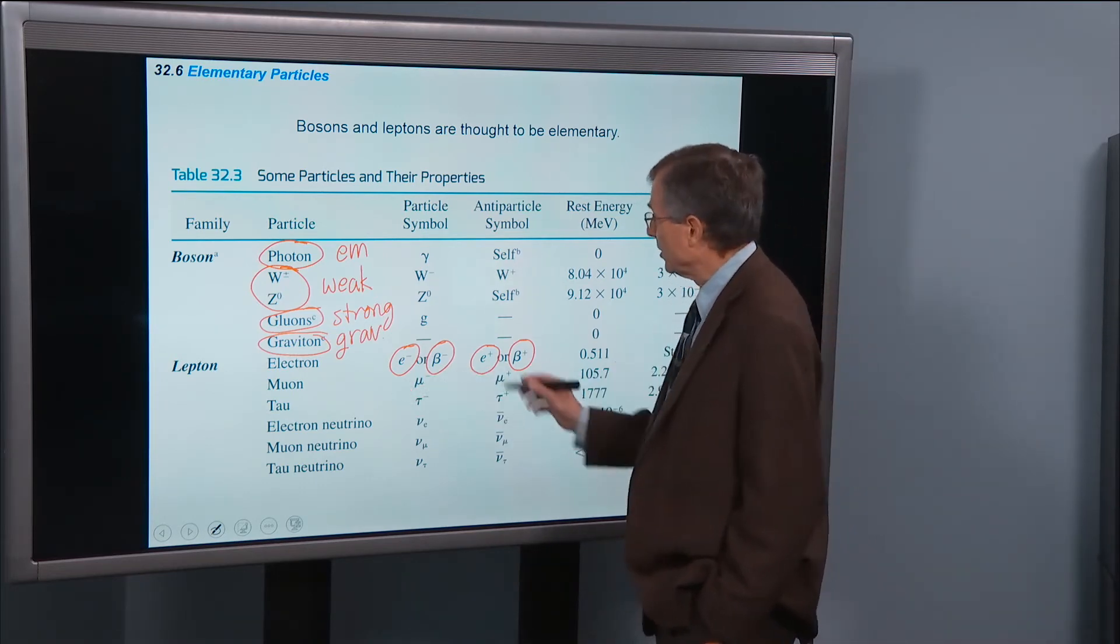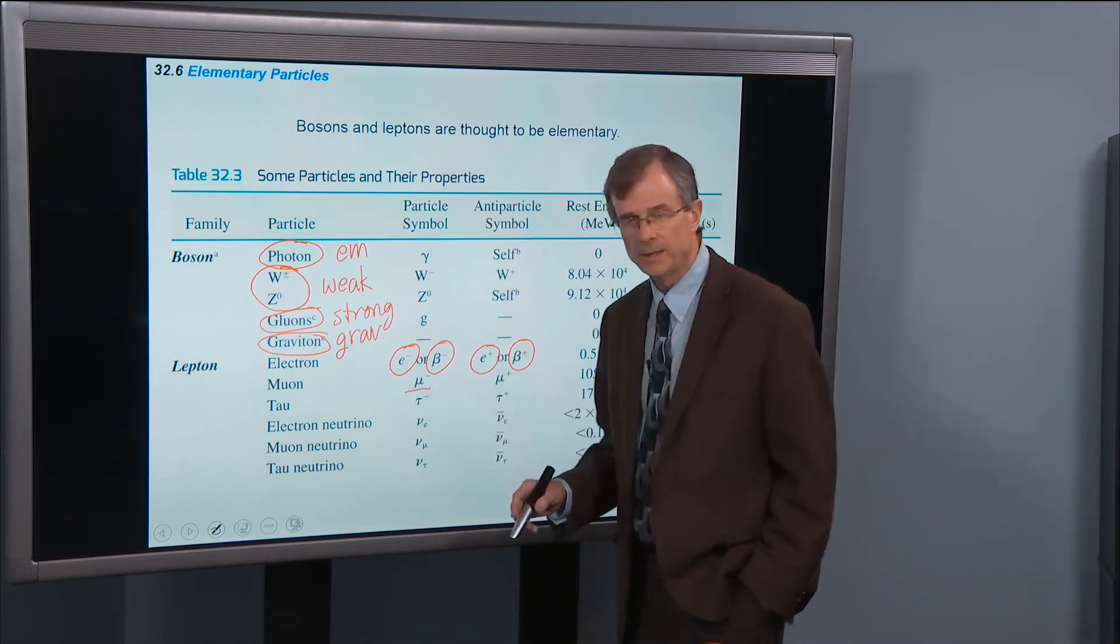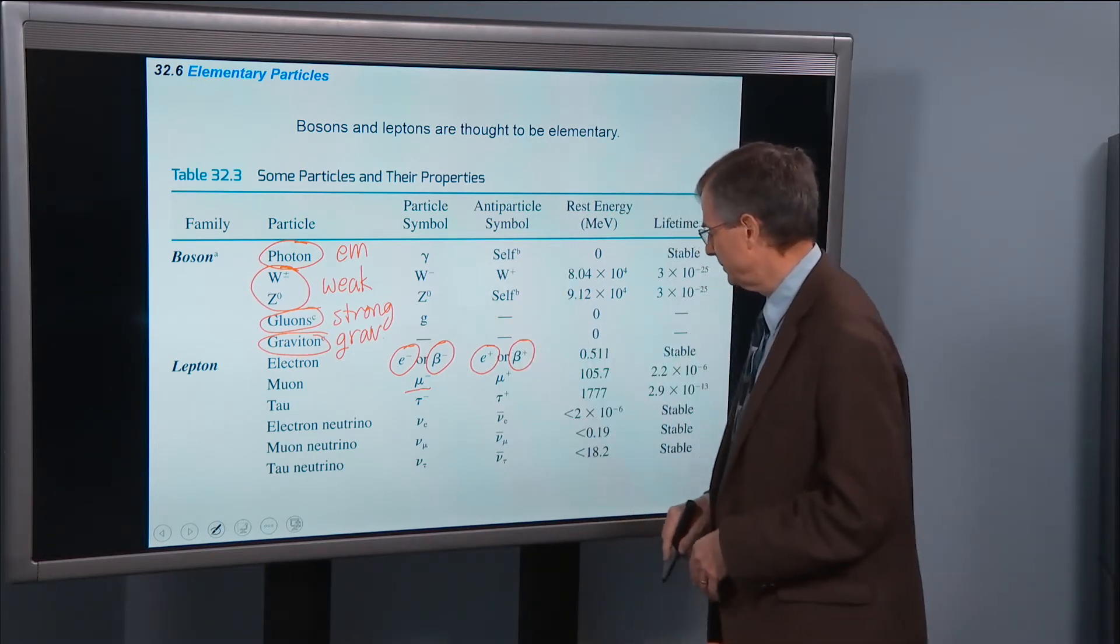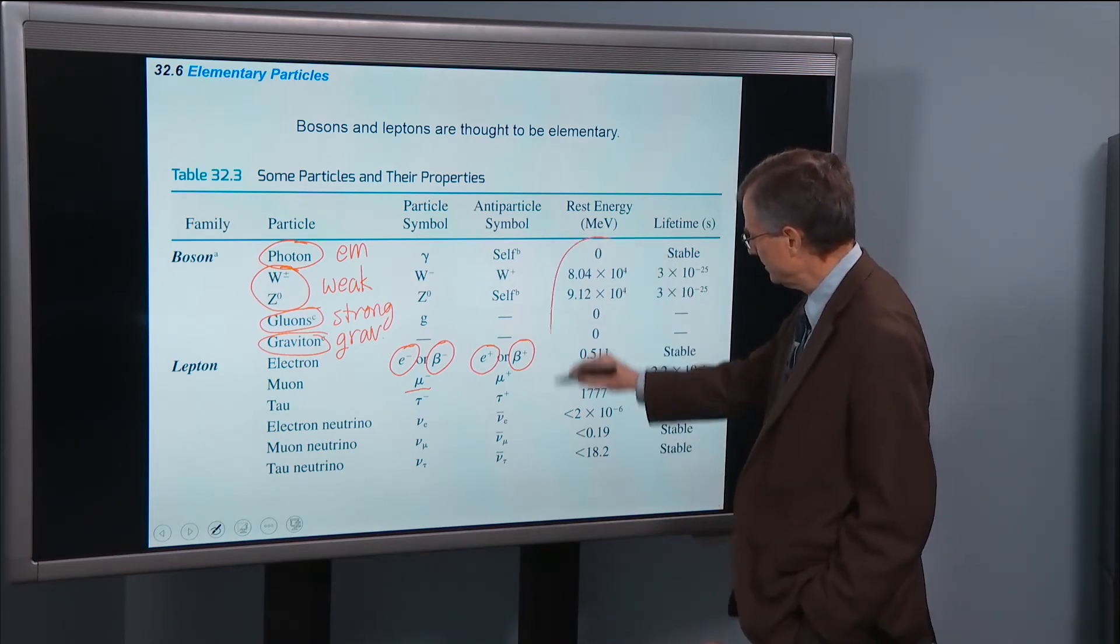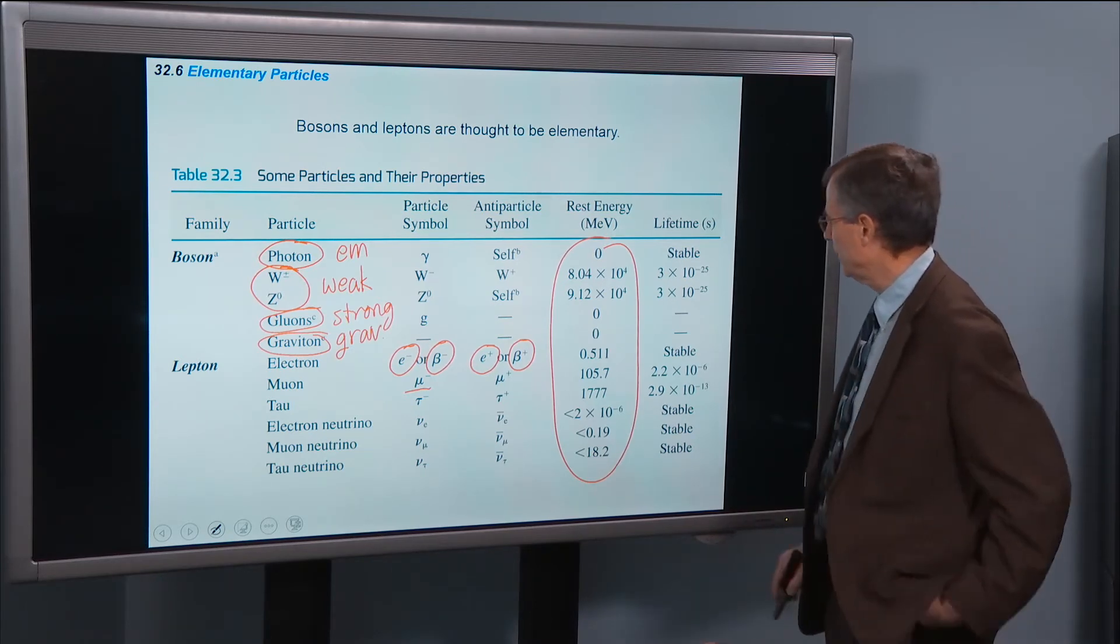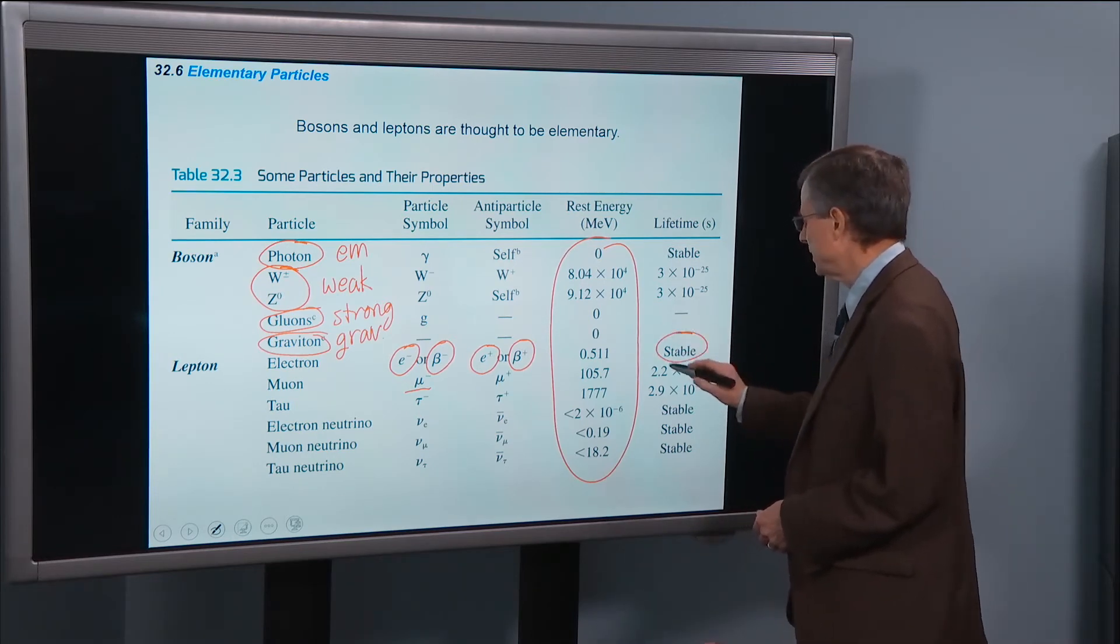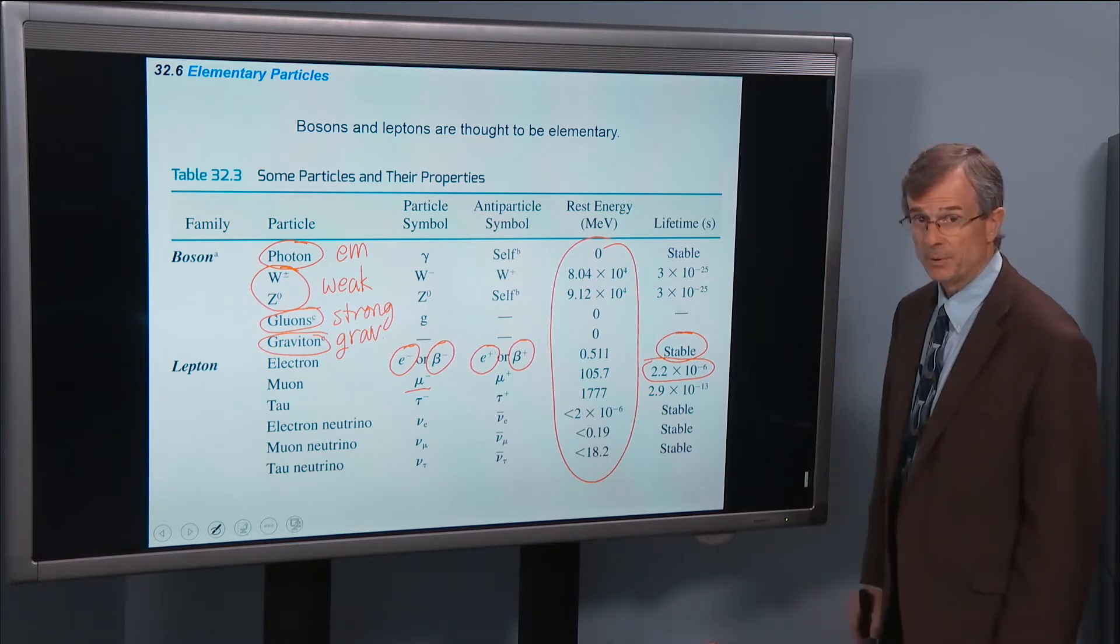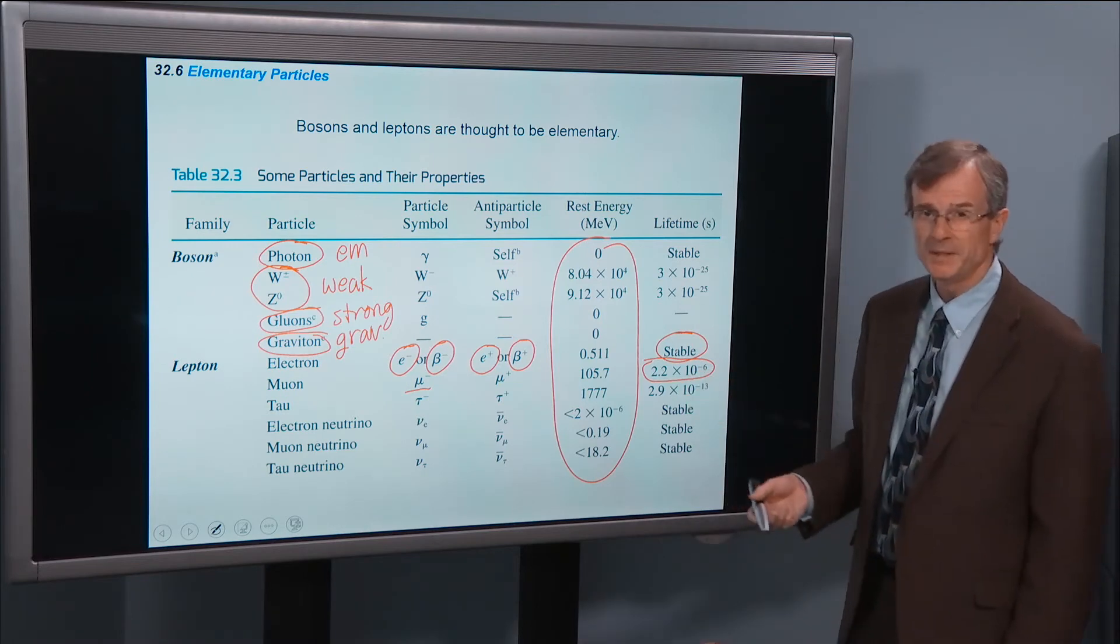All these different particles have their antiparticles. A muon, these are created by cosmic rays coming into our atmosphere. Their rest energies can all be calculated. Some are stable. The electron is stable. But the muon, for example, another lepton, is not stable. It has a lifetime of 10 to the minus 6, about one millionth of a second.